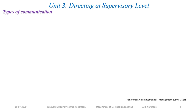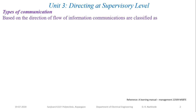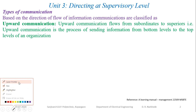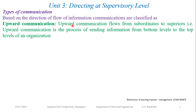Based on the direction of the flow of information, communication can be classified as upward communication and downward communication. In upward communication, information flows from subordinate to supervisor. Upward communication is the process of sending information from the bottom level to the top level of the organization.